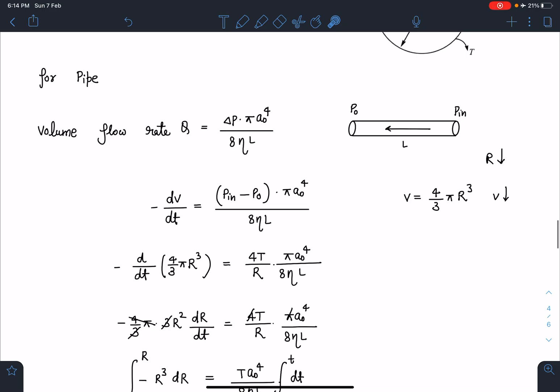When we substitute the value d/dt of volume of this bubble is 4/3 πr³ and this Pᵢₙ - P₀ I can substitute as 4T/R and into πa⁴/8ηL.